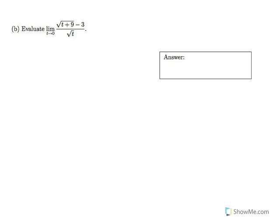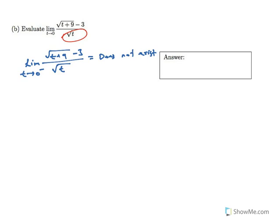Part B: find this limit. Looking at this function, the limit as t approaches 0 from the negative side does not exist, because at the bottom of this fraction t must be greater than zero. If t approaches from the negative side, the limit does not exist. When the left-side limit does not exist, the limit itself does not exist. The limit of a function at a point exists only if both the right-side and left-side limits exist and are equal.